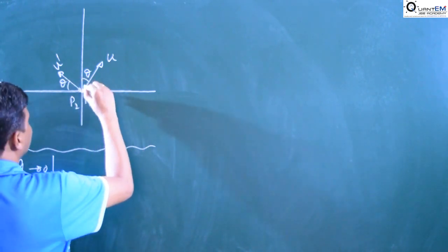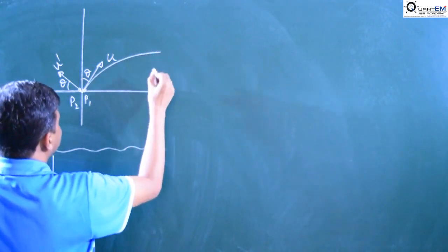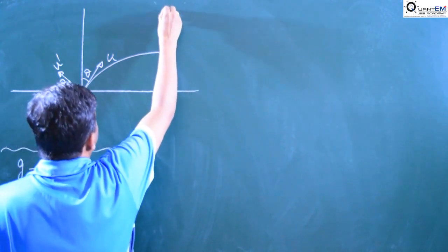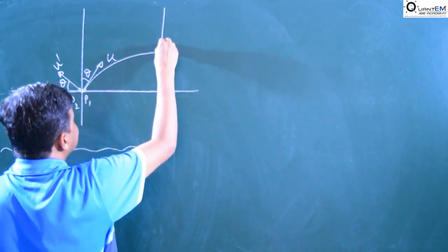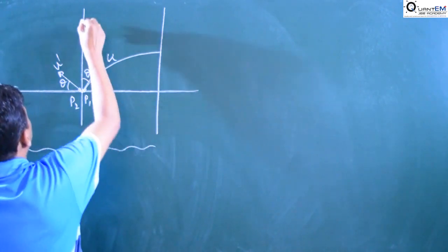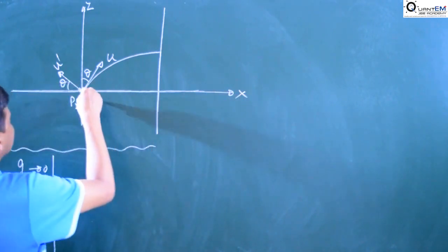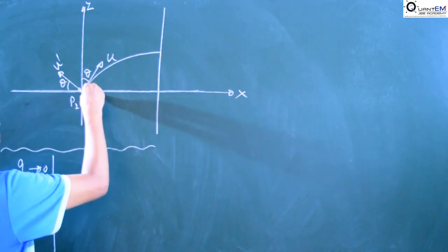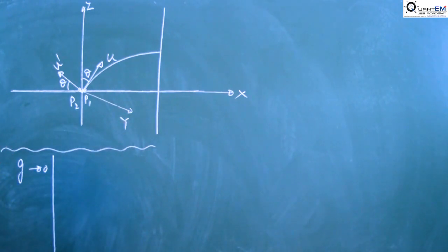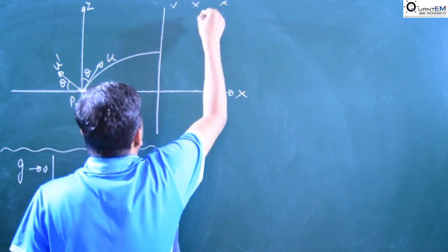When the first particle — first projectile — acquires the maximum height, it enters within the magnetic field. The magnetic field value B-naught is given, directed along the negative y-coordinate. This is the z-coordinate, this is the x-coordinate, and this is the y-coordinate — the y-coordinate is given. So the magnetic field is directed along the negative y-coordinate.